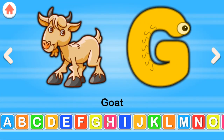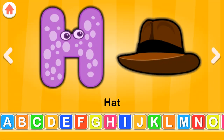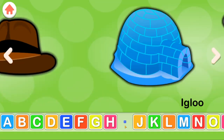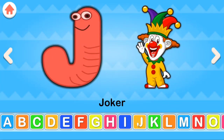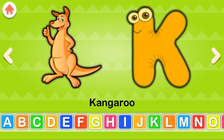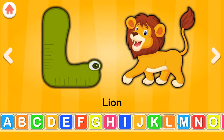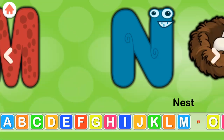G for goat, H for hat, I for igloo, J for joker, K for kangaroo, L for lion.